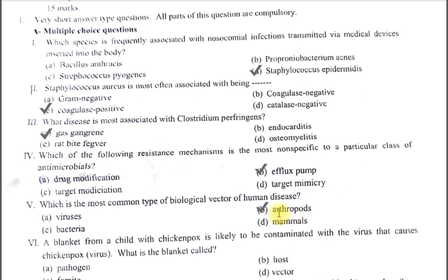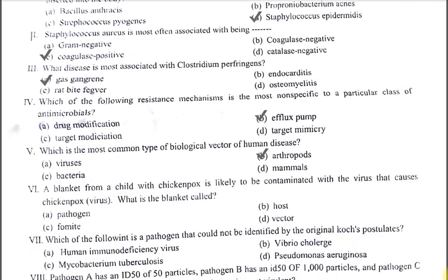The next question: a blanket from a child with chickenpox is likely to be contaminated with the virus that causes chickenpox. What is the blanket called? The options are A. Pathogen. B. Host. C. Fomite. D. Vector. The correct answer is C, fomite. Fomites are inanimate objects which can transmit the pathogen.